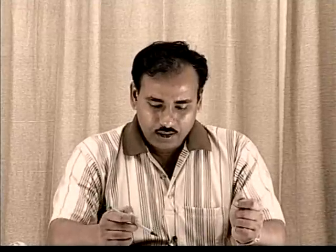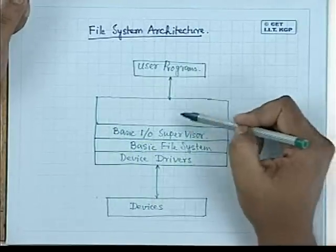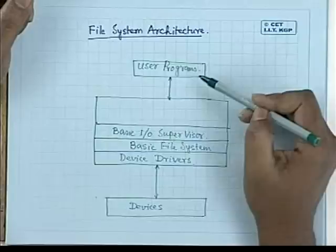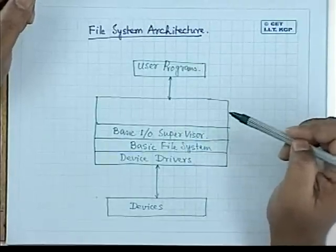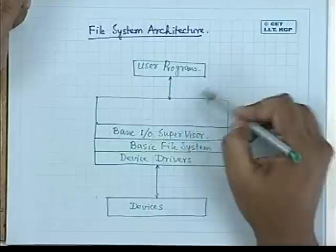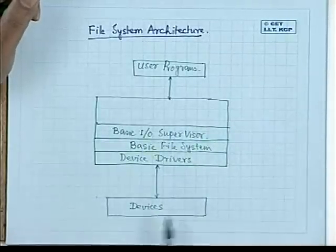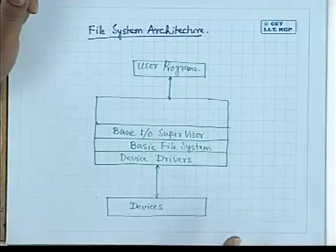In the last class we started our discussion on file system architecture. We saw that on one end of the file system we have the user program which puts requests for accessing different files, either for read, write, modification, or updation operations. At the other end we have the devices which contain the files.